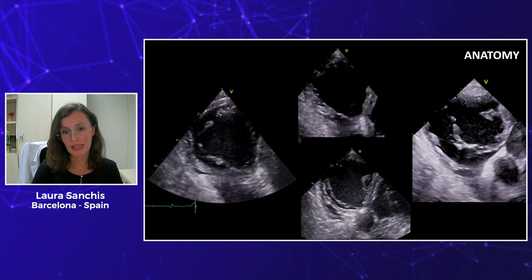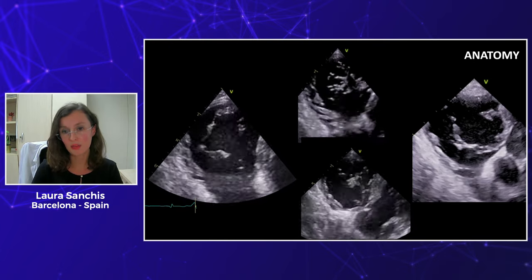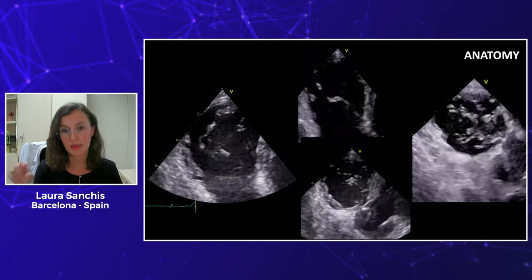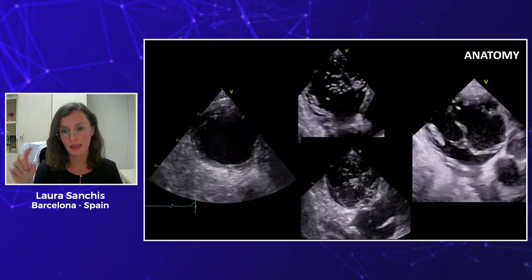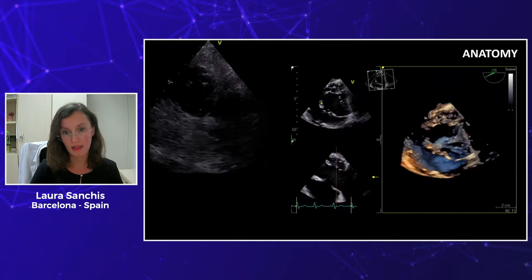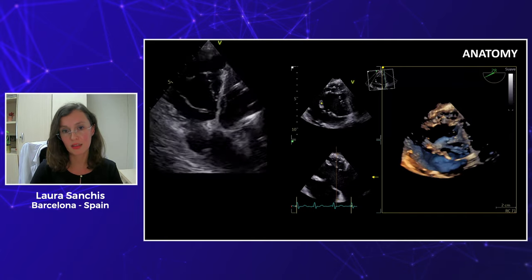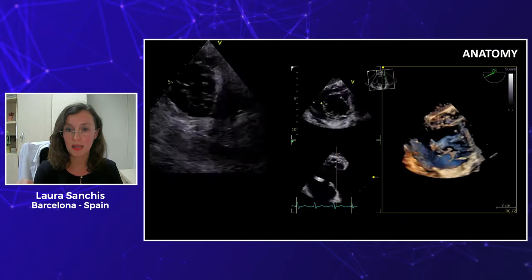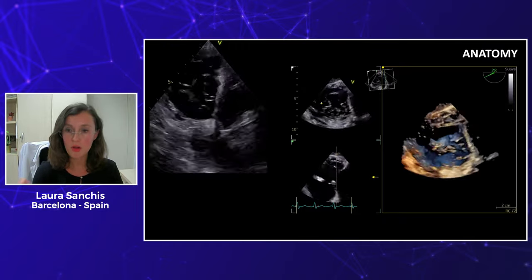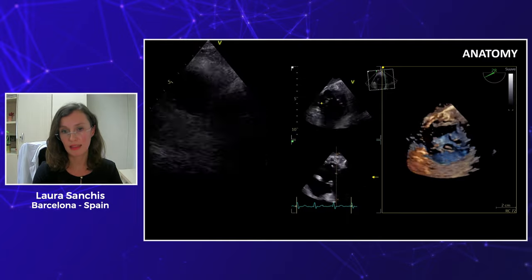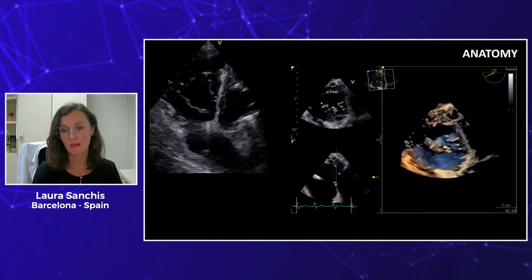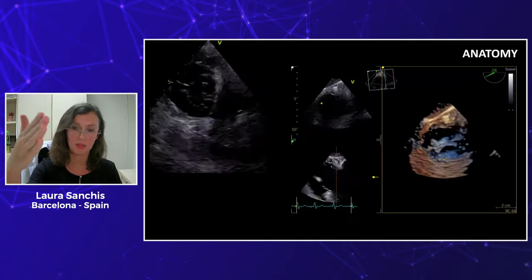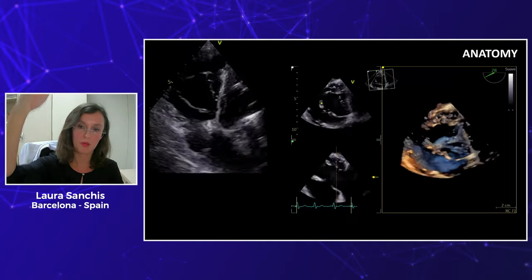To evaluate anatomy, use a nice short axis view in the transgastric view — this is where you can identify the number of leaflets and where the commissures are. If you do a 3D directly from this view and reduce the gain, you can identify the papillary muscle. Everything anterior to the papillary muscle will be anterior, and everything in the posterior part on the free wall will be posterior.